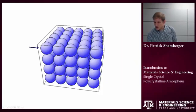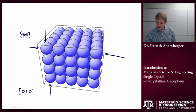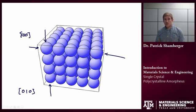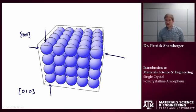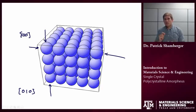One other point worth bringing up: if I look at the properties in one direction, say the [1,0,0], and I look at the properties in another direction related by symmetry, say the [0,1,0] direction, and these two directions are symmetrically equivalent, then I would expect the properties to be identical. So if I took a single crystal that happened to be cubic and measured the elastic modulus in the [1,0,0] direction and again in the [0,1,0] direction — I know these two directions are symmetrically equivalent, and that means the properties will also be equivalent in those two directions. The symmetry of the properties of a material is related to the symmetry of the crystal structure.